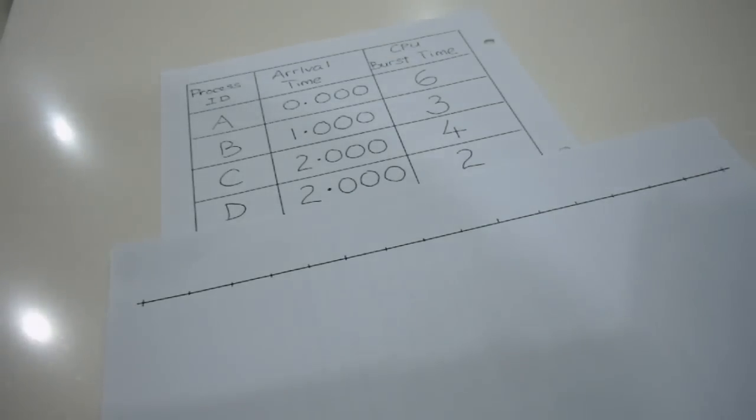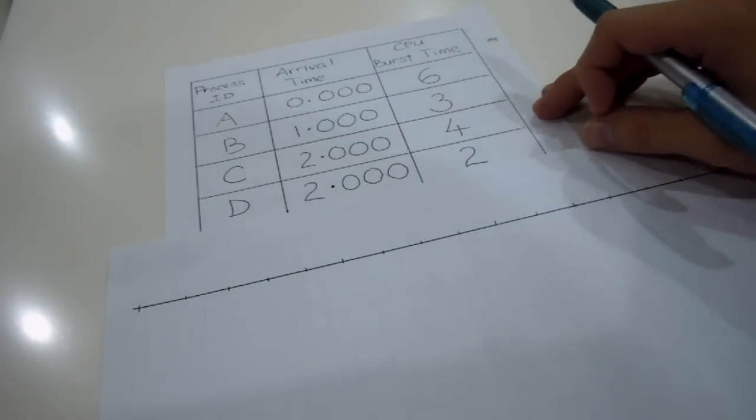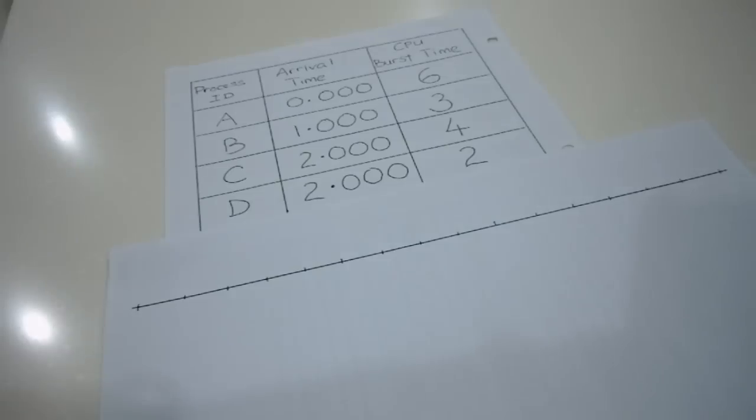Usually you'll be given a process scheduling table, something like this, showing you the CPU burst time and the arrival time of each of the processes.